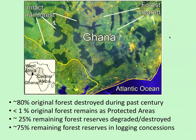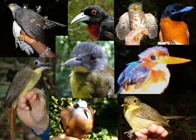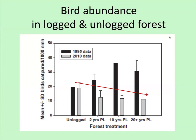We believe what changed was illegal logging. Ghana's population has exploded, and law enforcement for forestry and wildlife is extremely weak — agencies are very poorly funded. In contrast to the US where national parks have infrastructure, many national parks in Ghana are essentially unguarded. Other studies showed that between 1995 and 2010, logging intensities increased 600% even though on paper they didn't change. Forests are now being logged at four times the maximum sustainable rate.